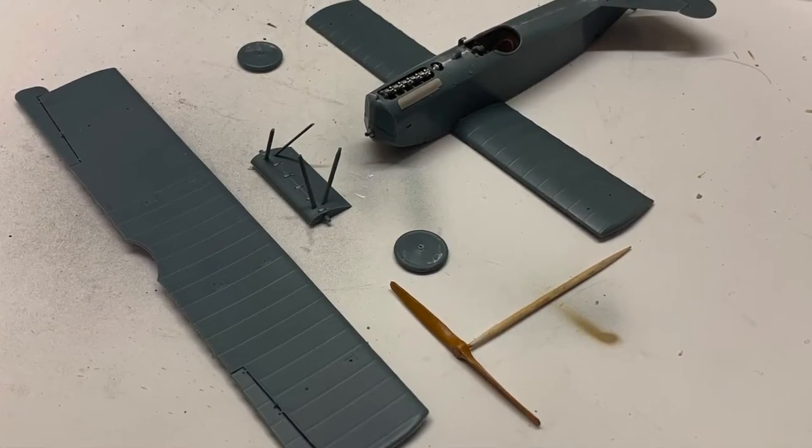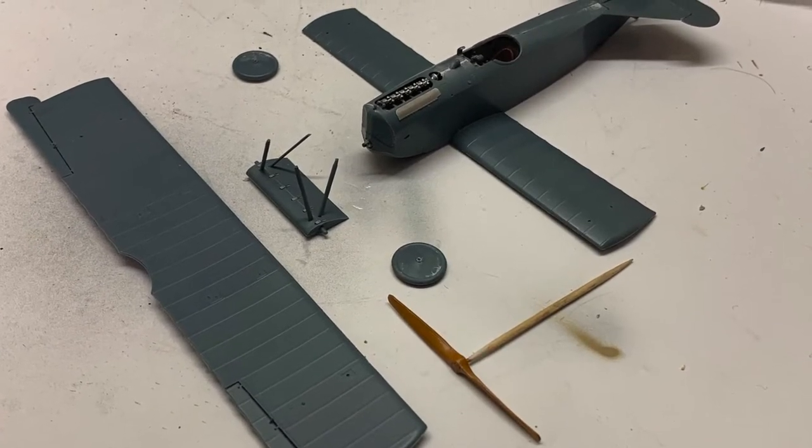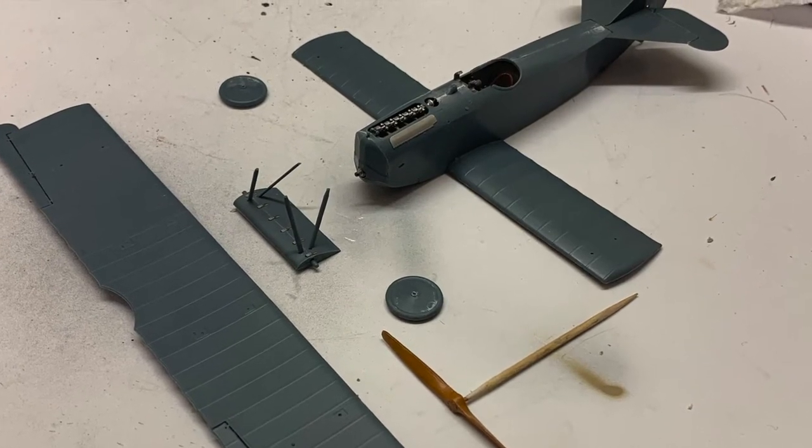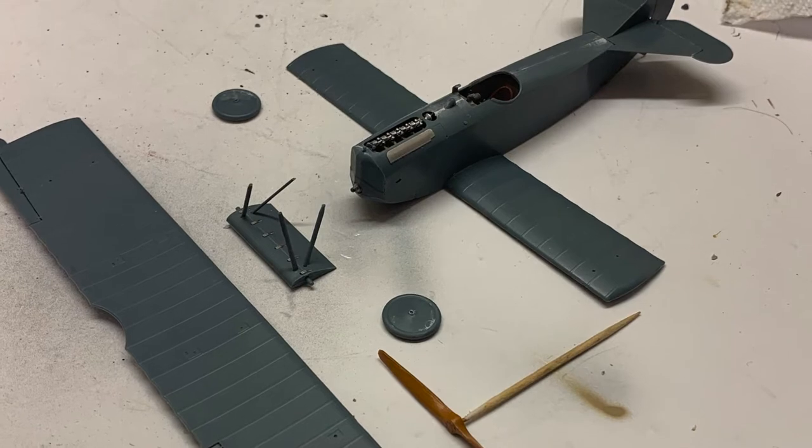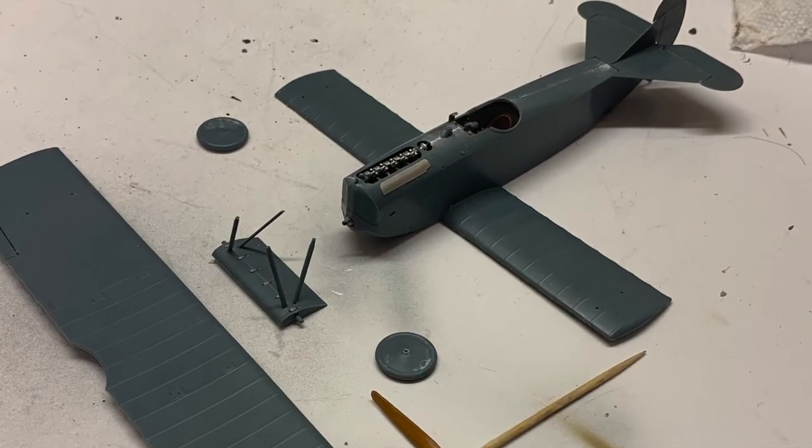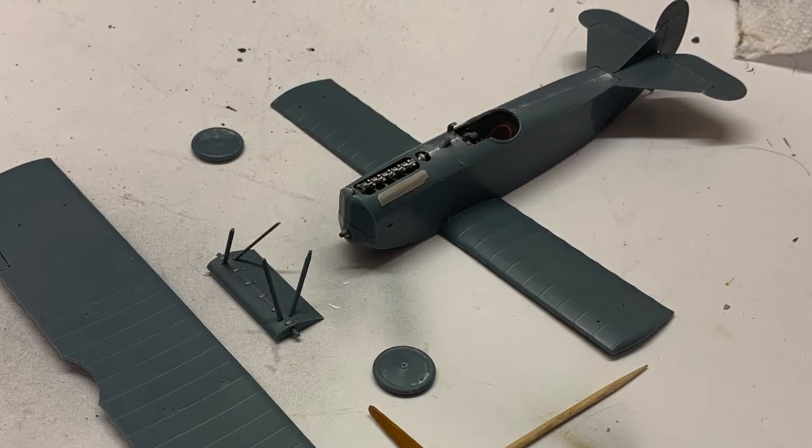Hi everyone and welcome back. Today we're going to put some paint on this gray hunk of plastic. If you haven't seen the previous two videos in this series where I build this Fokker D7, you should check them out. I'll put a link in the description.